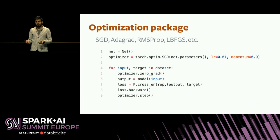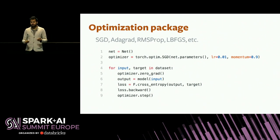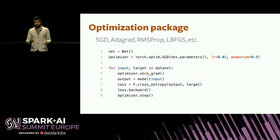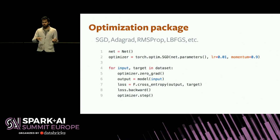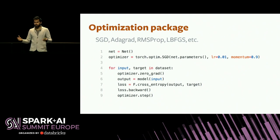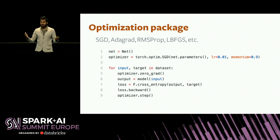We also provide an optimization package for gradient descent-based optimization algorithms. A typical training loop for neural networks: you loop over your dataset, zero the gradients from the previous iteration, send your input through your model, get an output, compute a loss function — in this case cross-entropy loss — then call loss.backward(), and automatically gradients are computed for all weights with respect to the loss. Then you call optimizer.step(), which does the gradient descent step. Typically you'd see your loss go down if your data is well-behaved.